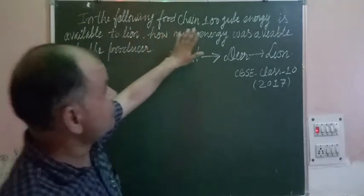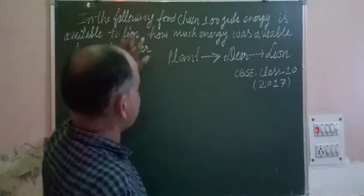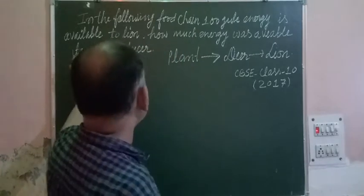In the following food chain, 100 joule energy is available to the lion. How much energy is available to the producer?